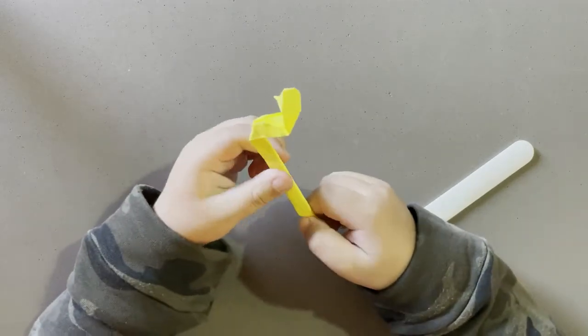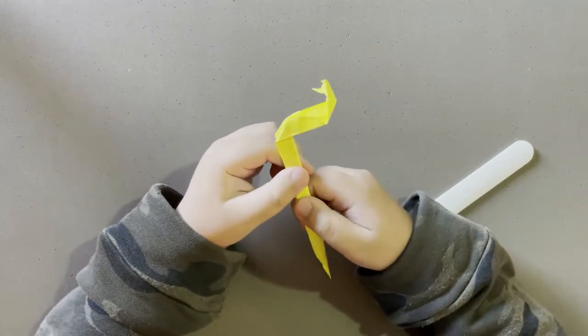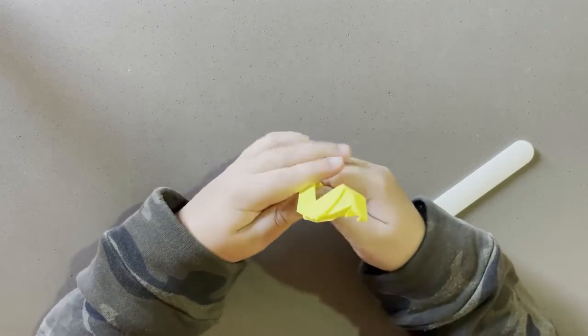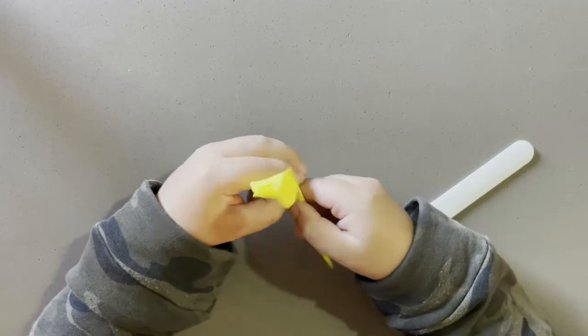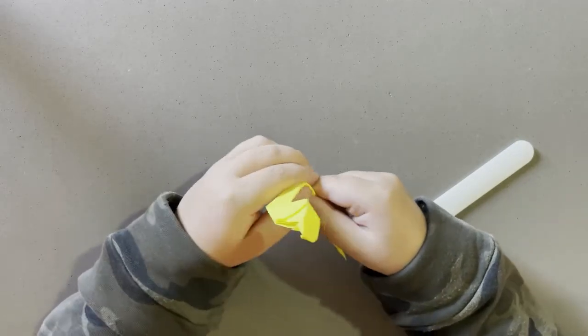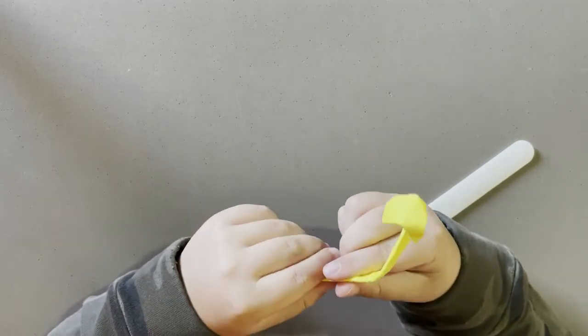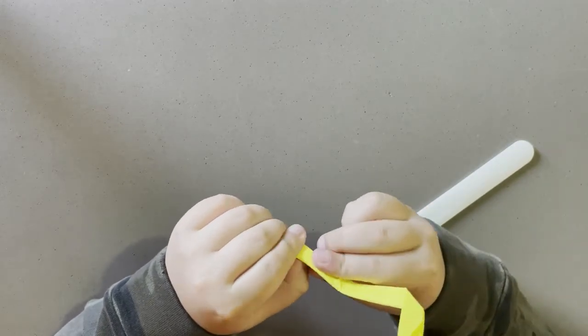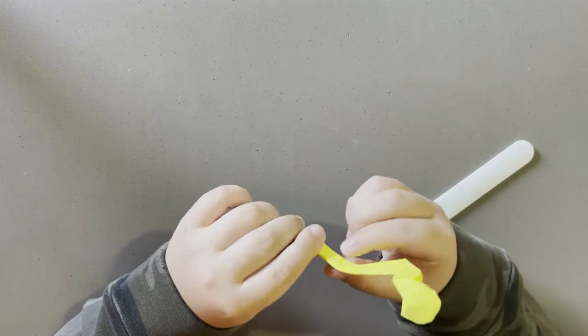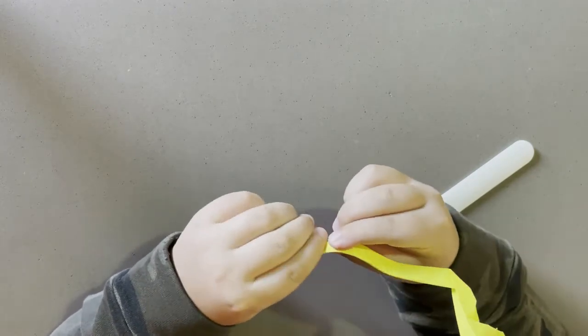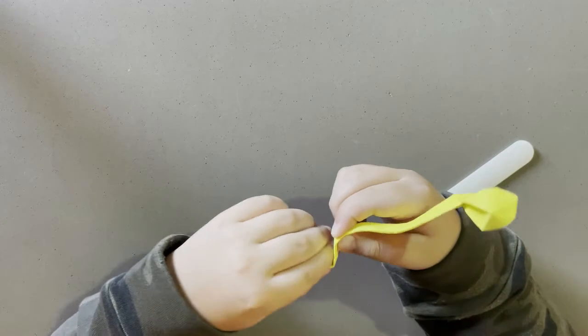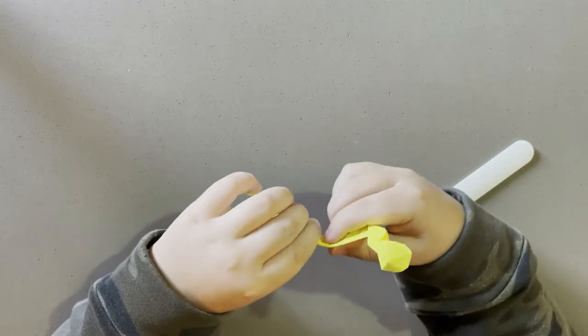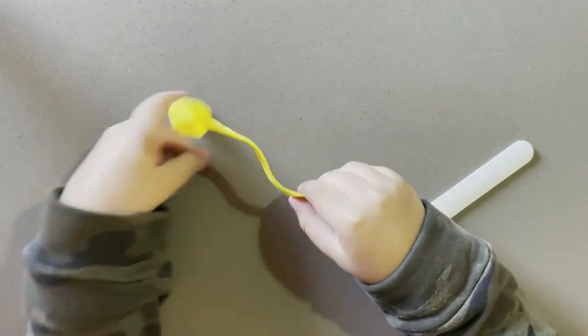Now you're going to make it wiggly. So you take it like that and curve it just like we did for the jaw. Do it like about three times. And then it should look something like this.